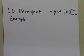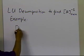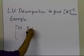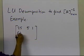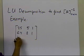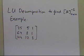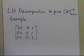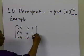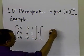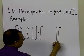So let's take an example where we want to find the inverse of the matrix [25, 5, 1; 64, 8, 1; 144, 12, 1]. Somebody is giving us this 3-by-3 matrix and wants us to find its inverse using the LU decomposition method. To do that, we first need to know the L and U of this particular matrix.